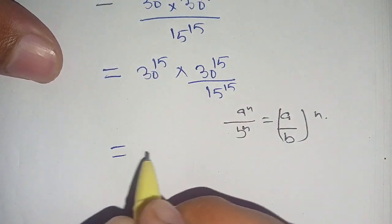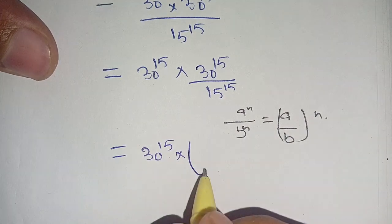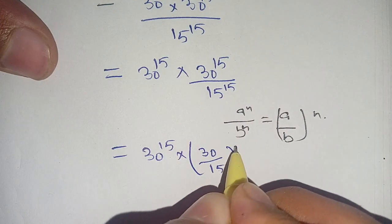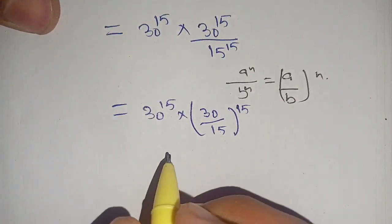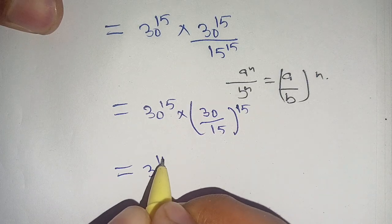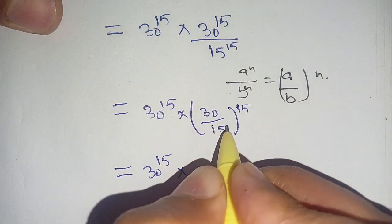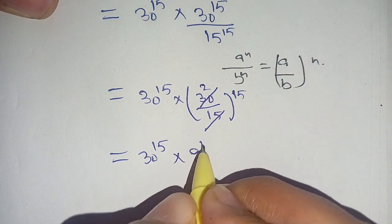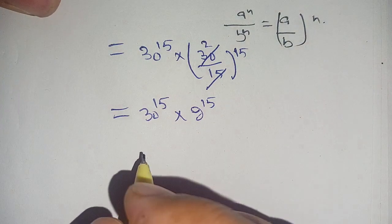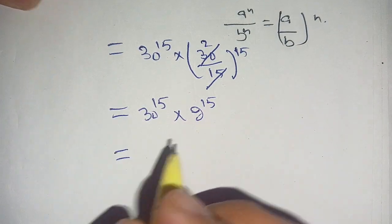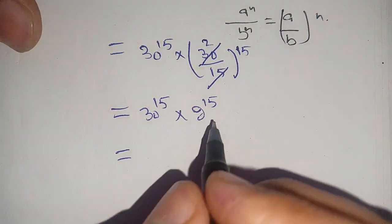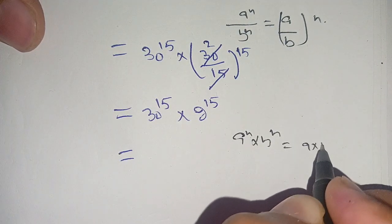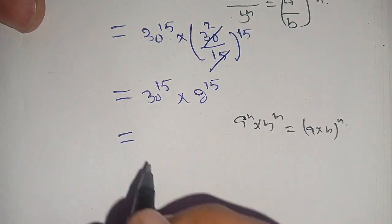Now by using this identity we get 30 power 15 times (30 divided by 15) whole power 15. Now we have 30 divided by 15 which becomes 2, so it becomes 30 power 15 times 2 power 15.